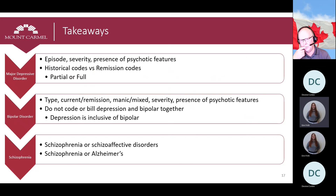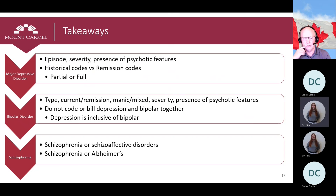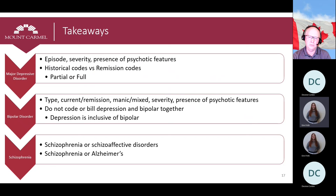To wrap up our presentation, it is important to document and code chronic conditions such as bipolar and major depressive disorder to the highest level of specificity that accurately reflects patient burden of illness. Avoid using broad terms such as 'patient has bipolar' or 'patient has depression.' Specify in the documentation the severity, the patient's current episode, and whether they are experiencing psychotic features. The documentation must reflect and support the level of specification in the ICD-10 code. Depression and bipolar should not be coded and billed together as they are considered inclusive. If you are interested in a further deep dive into depression documentation and coding, please visit the Mt. Carmel Health Partners website for previous webinars and other educational content.